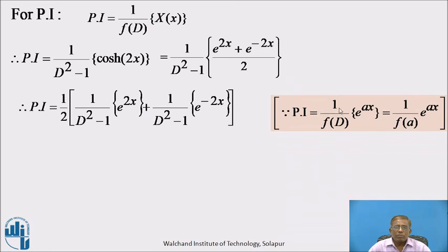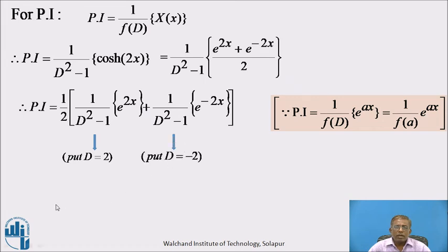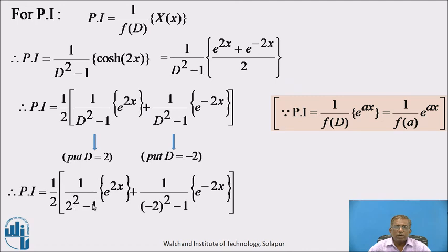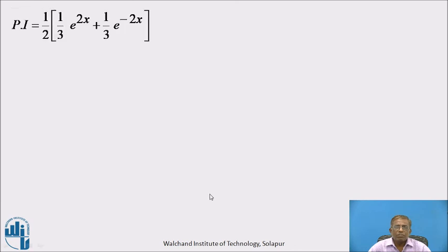Both functions are of the type e^(ax), so by Case 1 put D equal to a. In the first term e^(2x), a = 2, so put D = 2; in the second term e^(−2x), a = −2, so put D = −2. Hence, PI = 1/2 · [1/(2² − 1)·e^(2x) + 1/((−2)² − 1)·e^(−2x)] = 1/2 · [1/3·e^(2x) + 1/3·e^(−2x)].